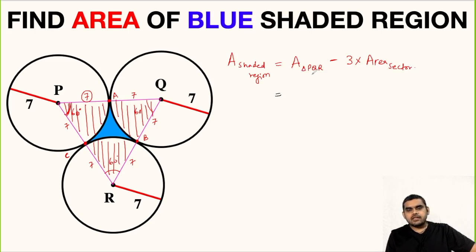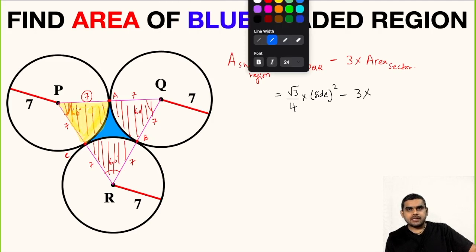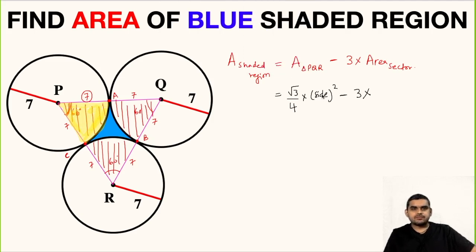So, area of an equilateral triangle is given by: root 3 upon 4, multiplied with side squared, minus 3 times area of sector. Let us take this sector for our calculation, so we will find the area of this highlighted sector and multiply it with 3.